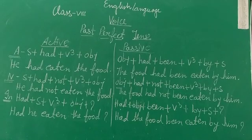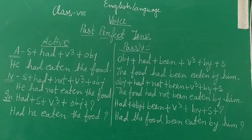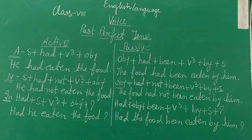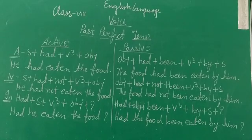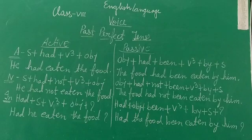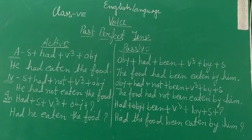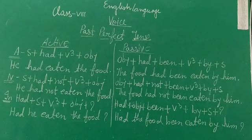If the active voice is in negative of past perfect tense, it's subject plus had plus not plus V3 plus object. Then passive form will be object plus had plus not plus been. Not is used between had and been.